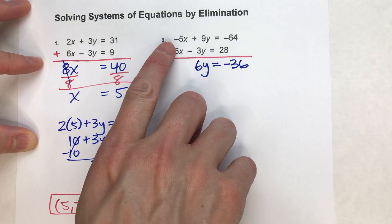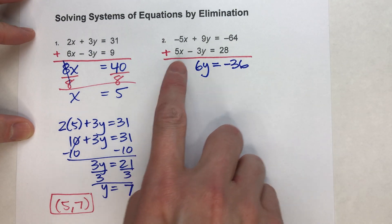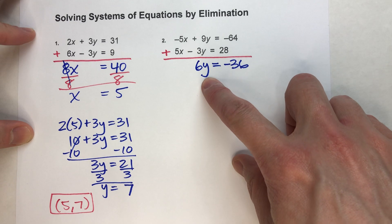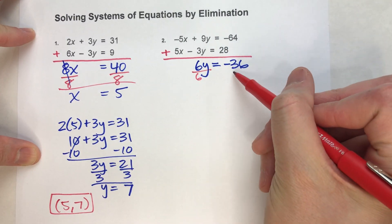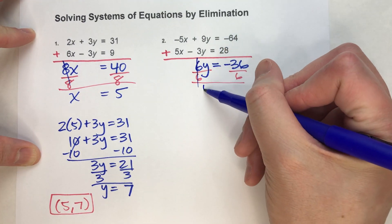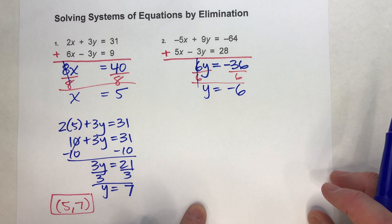So again, because we have negative 5x and positive 5x, when we add them together, it completely eliminates the x's. Now we have an equation with just y's that we can solve. Let's do that. Divide both sides by 6, end up getting y equals negative 6. So we're halfway done. Now we just need to find x.